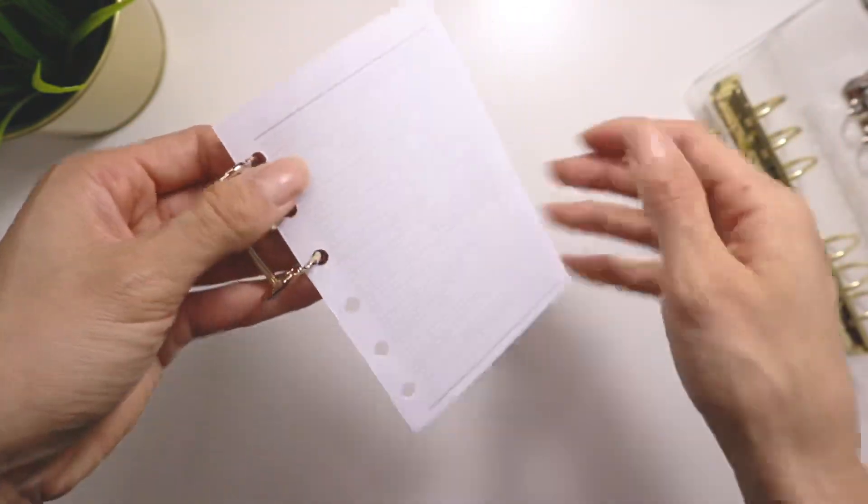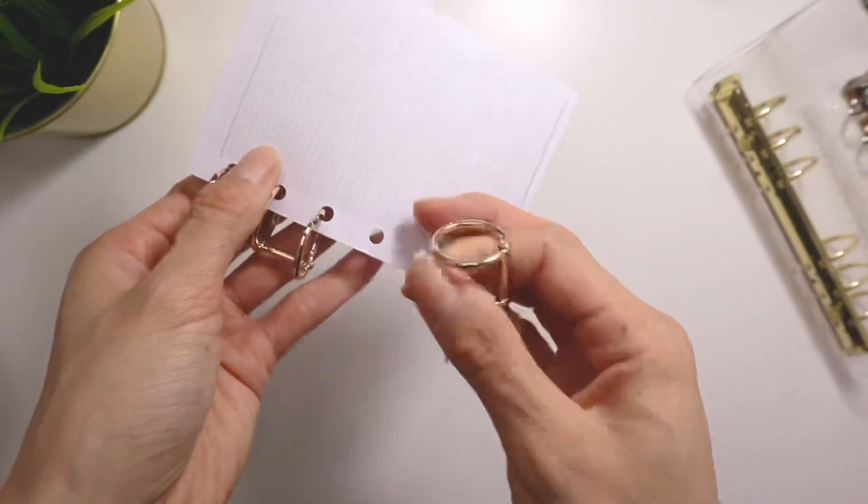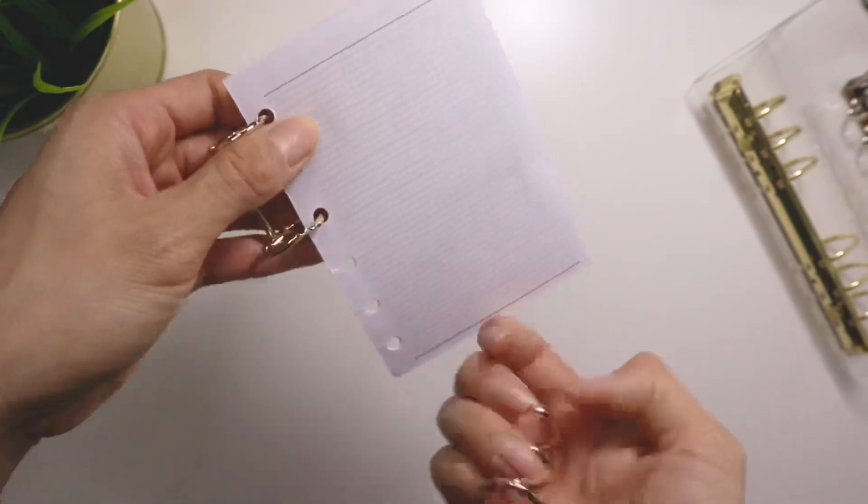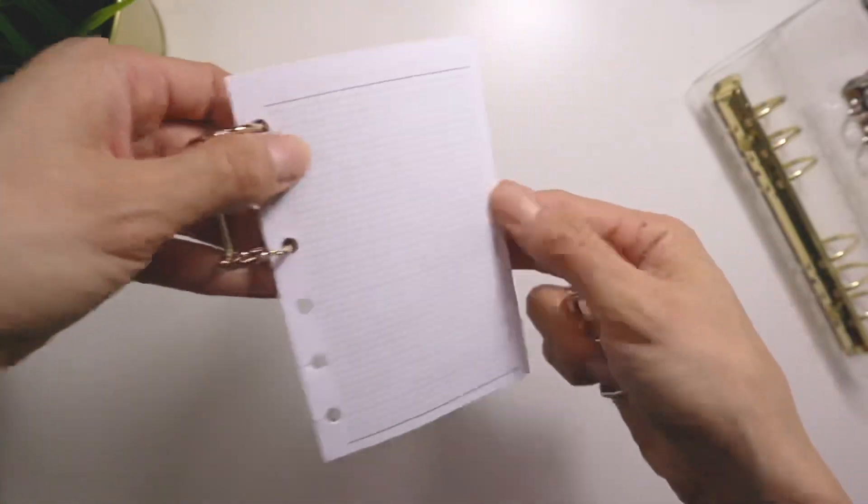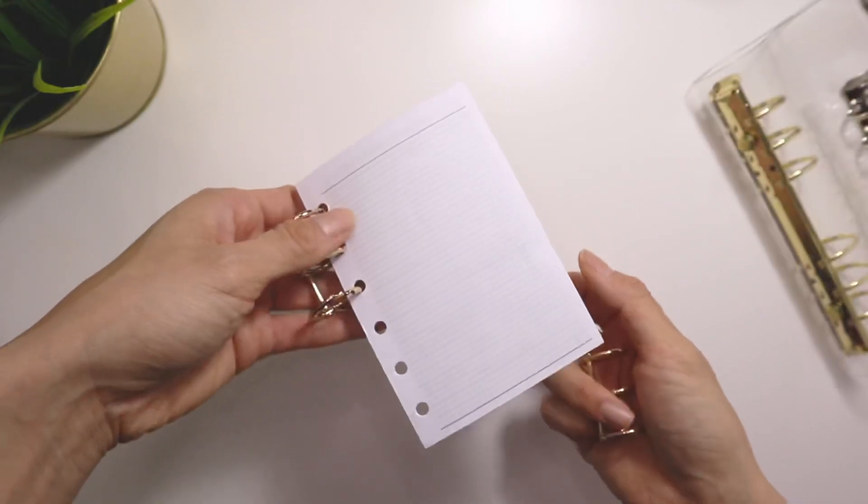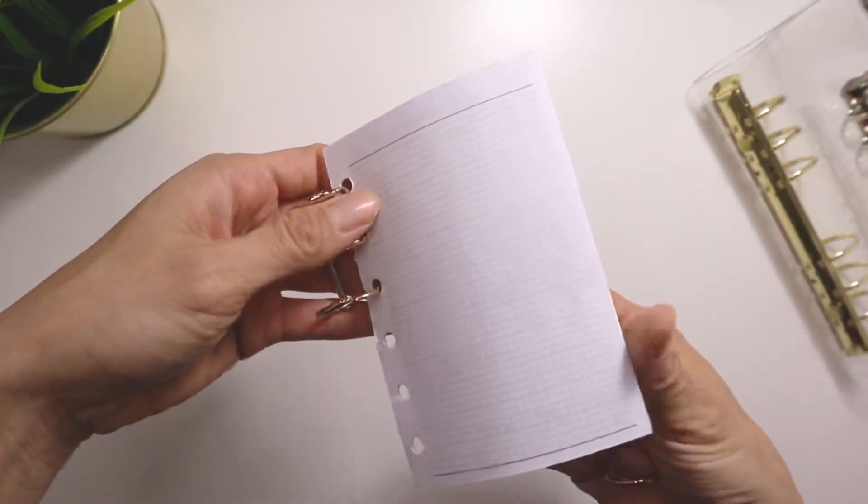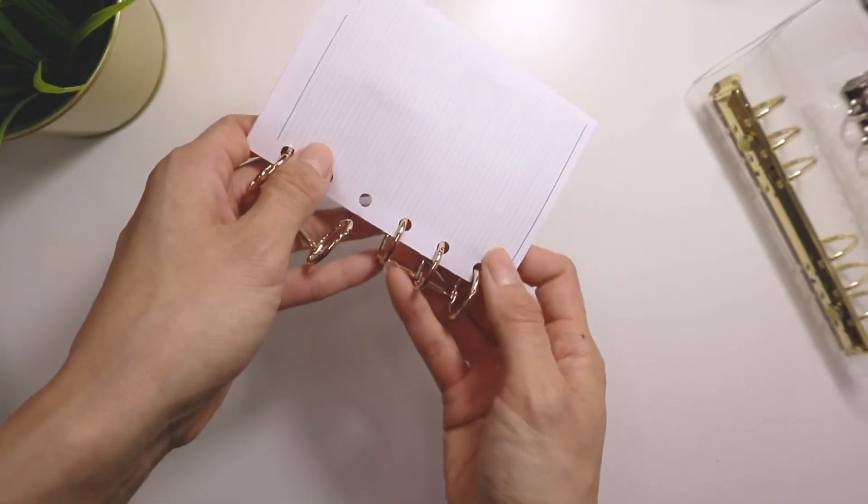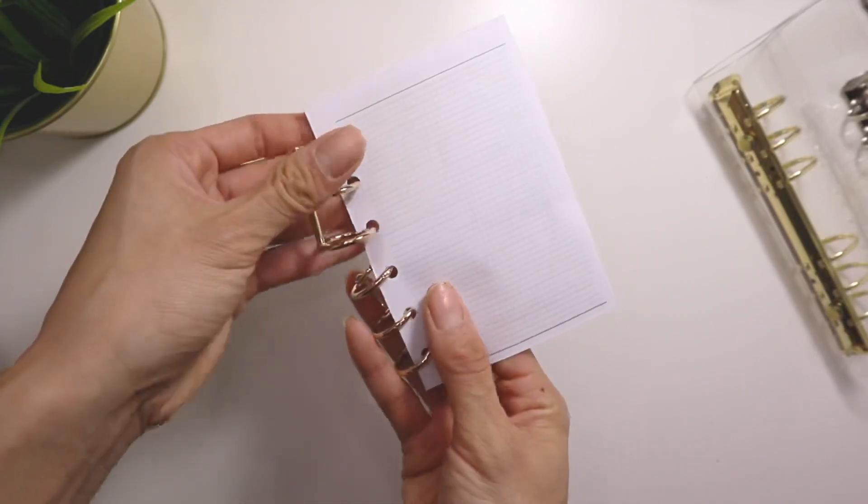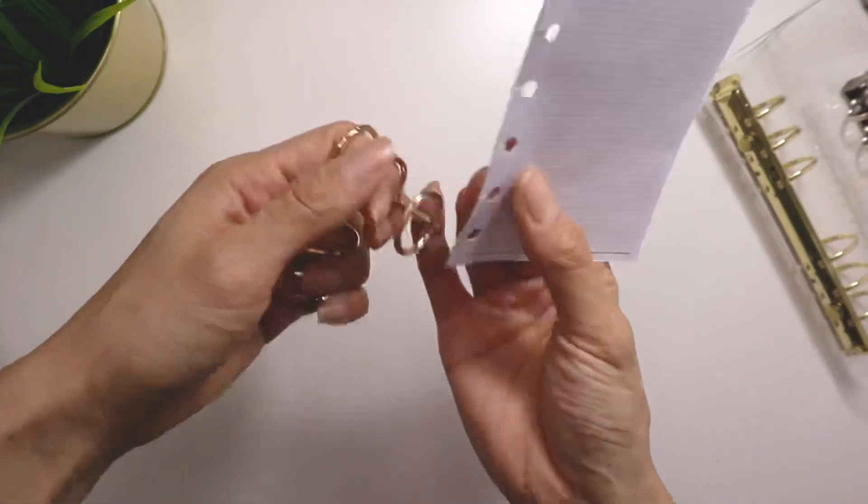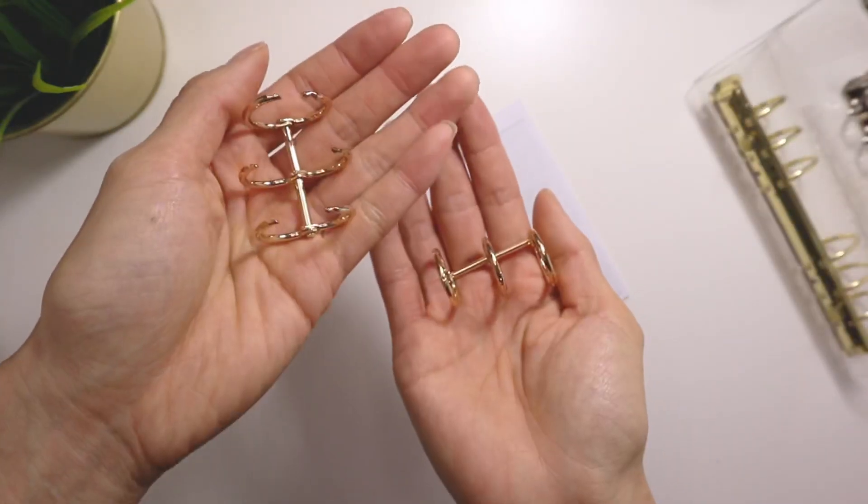But either way, and I know that some people actually use these like as the rings for like a planner because you can put your inserts in here and then stick it in like a cover, like a planner, like a notebook type cover, like the LV desk agenda or any kind of planner cover that doesn't have rings. And then you could just use this kind of that's the ring. So dual purpose. But these are great and are also a really inexpensive option.